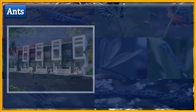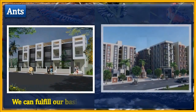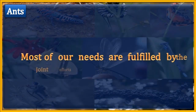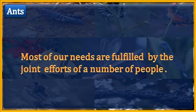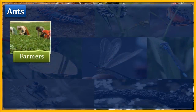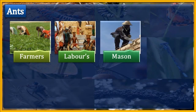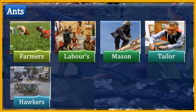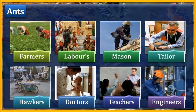We live in a society so that we can fulfill our basic needs of food, shelter, and clothing. Most of our needs are fulfilled by the joint efforts of a number of people, including farmers, labourers, masons, tailors, hawkers, doctors, teachers, engineers, and so on.